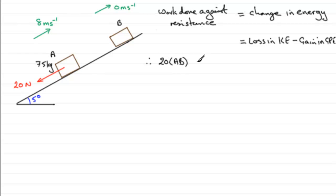So force times distance equals the loss in kinetic energy. Well kinetic energy is a half mv squared, and so it's going to be a half of the mass, the mass is 75 kilograms, times v squared, 8 squared there. It had no kinetic energy up here. So this is going to be the loss in kinetic energy, half mv squared.